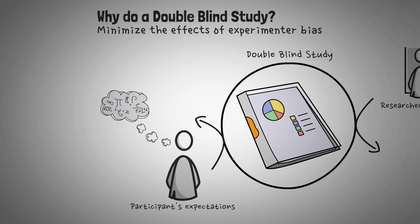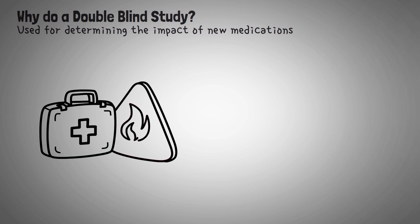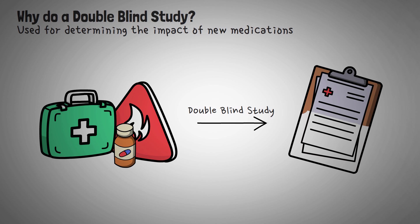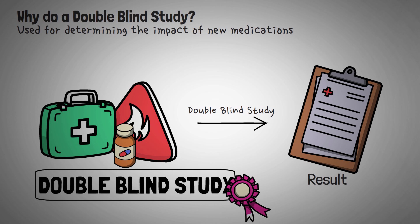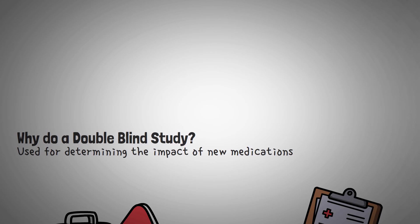Double blind studies serve as an invaluable scientific method in the pharmaceutical industry, specifically in trials where they're regularly used for determining the impact of new medications. These types of studies are the very foundation of modern evidence-based medicine. They're often referred to as the gold standard for testing medications, that is, the most accurate test available.